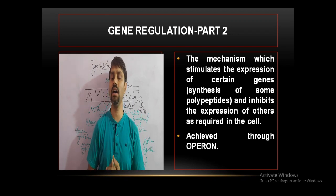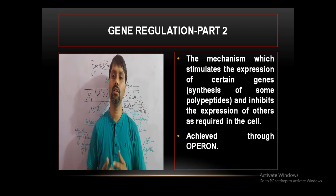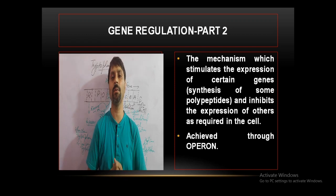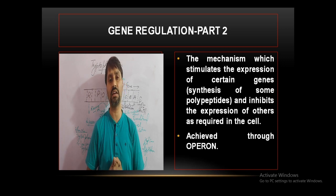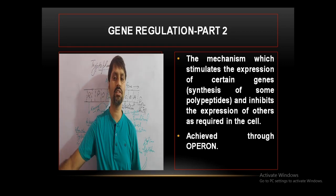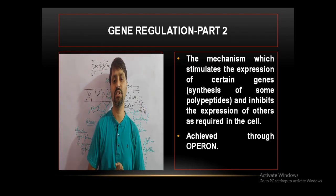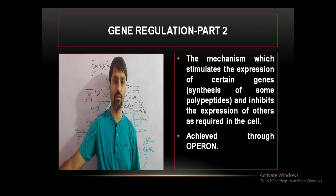The lac operon is a type of operon that performs gene regulation in prokaryotes. Today we will study one more operon — a repressible operon, the tryptophan operon in prokaryotes. We will also learn how gene regulation occurs in eukaryotes. Gene regulation is a mechanism which stimulates certain genes and inhibits the expression of others as required by the cell. It is achieved through the operon.